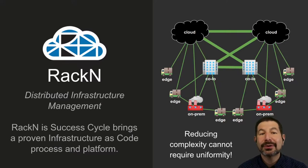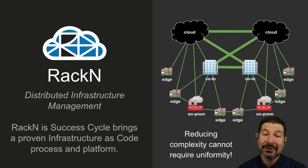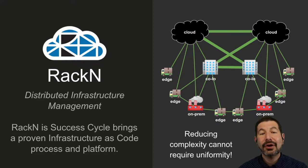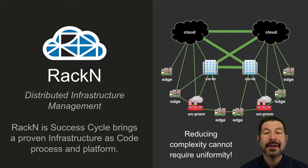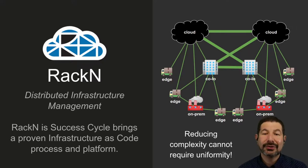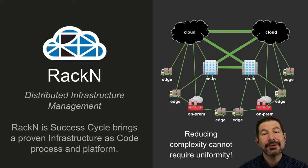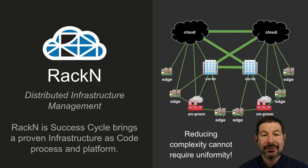Racken approaches this with distributed infrastructure management technologies and processes. Our success cycle is a proven approach that takes infrastructure as code into the very depths of solving these problems with you at your company. The number one thing for us is we're not trying to create a single infrastructure or force you to move everything to one cloud or buy only one type of server. What we work to do is reduce complexity without requiring uniformity of solution.